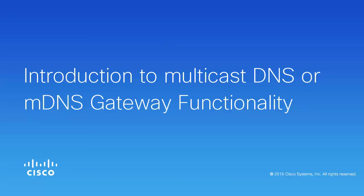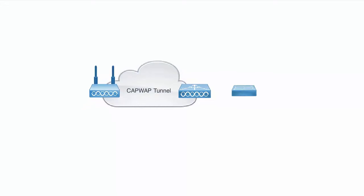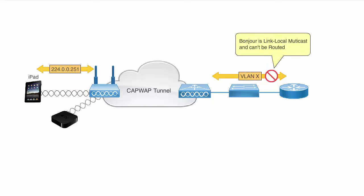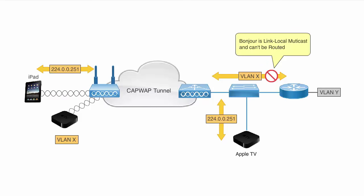This video describes the topology, restrictions, limitations, and an overview of steps involved in configuring multicast DNS or MDNS on Cisco Wireless Controller or Cisco WLC. MDNS supports zero configuration and uses multicast IP address 224.0.0.251 as the destination address and 5353 as the user datagram protocol destination port address.